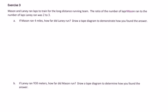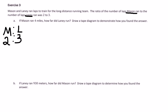So Mason is being compared to Lani. The ratio 2 to 3 refers to Mason to Lani. Now they would like us to answer how far did Lani run, and to do that, they want us to draw a tape diagram. Before I even worry about the other information they gave us, I'm going to draw a tape diagram — one representing Mason and one representing Lani.